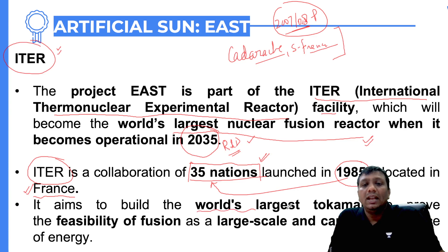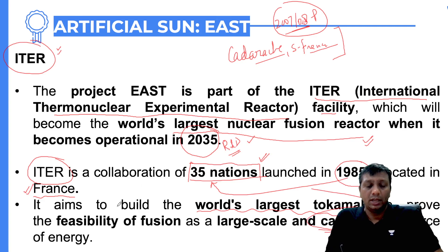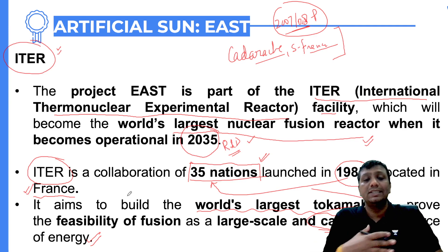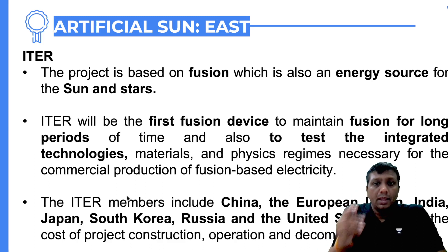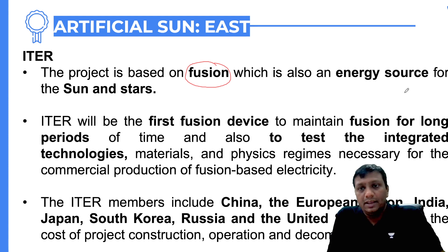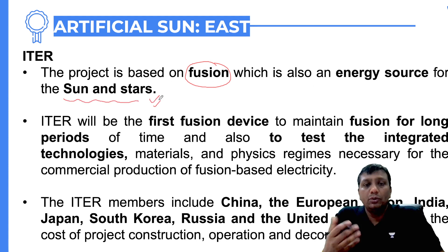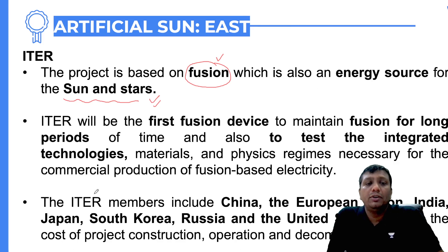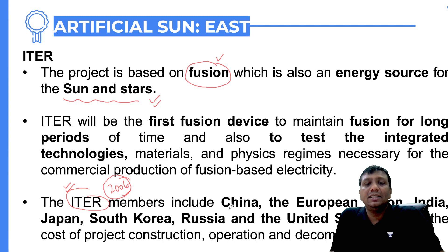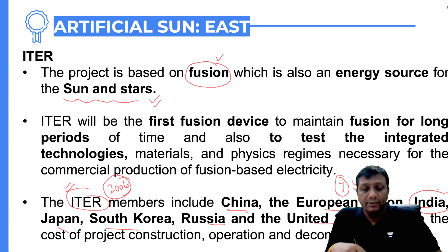ITER is the world's largest fusion reactor coming up. Fusion will not create any kind of pollution — it is totally carbon-free, and infinite heat or energy is possible. Worldwide power crisis problems can be solved. The energy of the Sun and stars comes from fusion. In 2006, seven countries came together for the ITER reactor: China, European Union, India, Japan, South Korea, Russia, and the United States. So India is also one of the members.